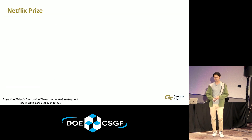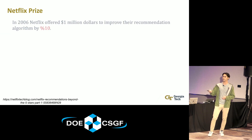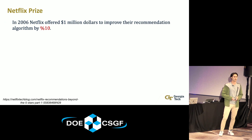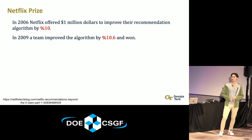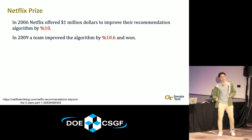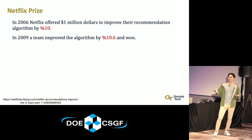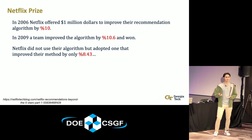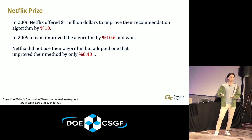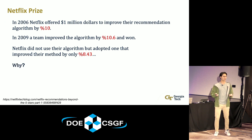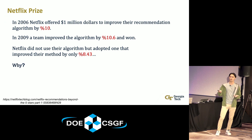Now I'll tell a little story to motivate the research. In 2009, Netflix offered a million-dollar prize to improve their recommendation algorithm by 10%. A bunch of research teams worked on this, and after three years a team improved the algorithm by about 10.5% and won the prize. But that's actually not what happened next — Netflix didn't end up using that algorithm; they used a different one submitted by a different team that only got 8.5%.